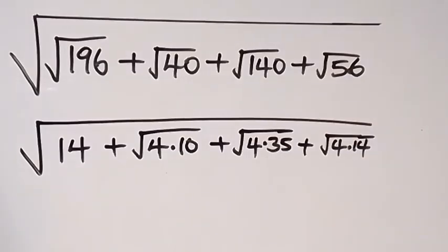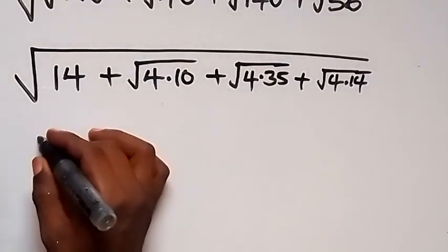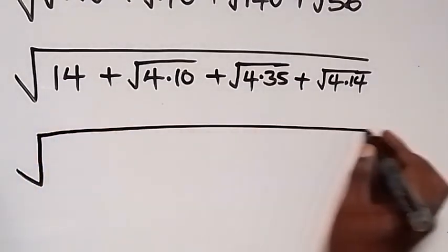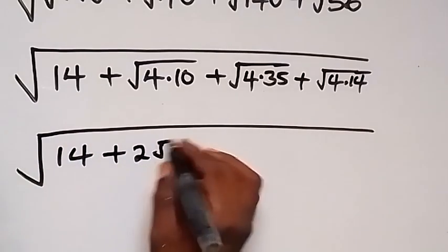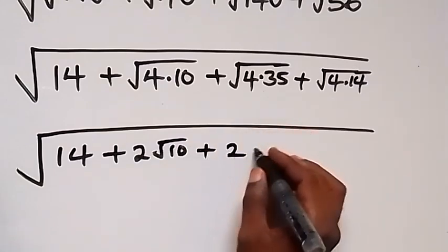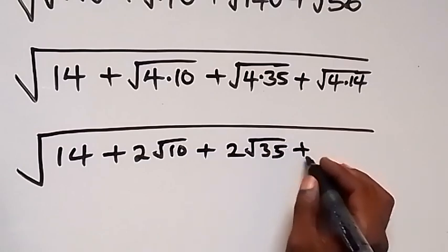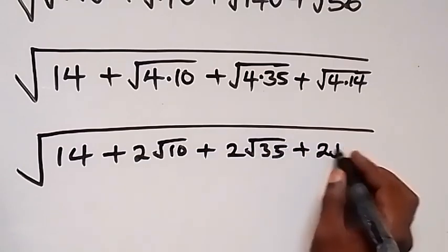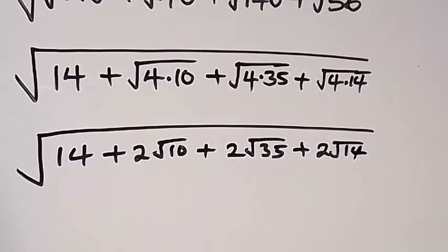So we can rewrite that. In the next step this will become square root of: we have 14, plus here it will be 2 root 10, then plus here it will be 2 root 35, then plus here it will be 2 root 14.